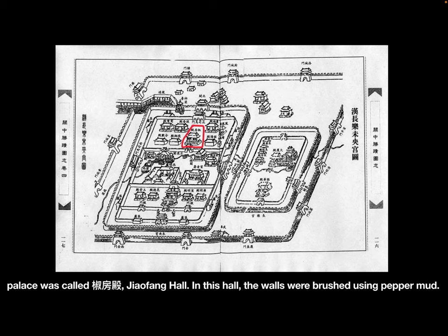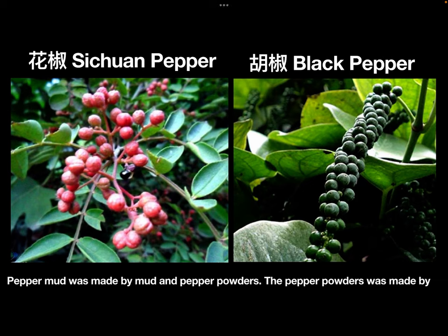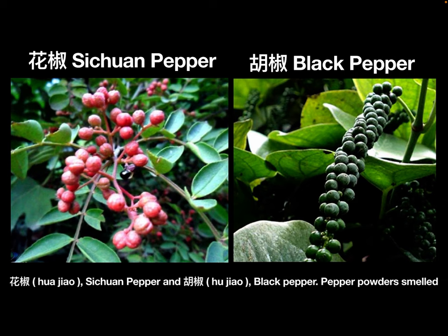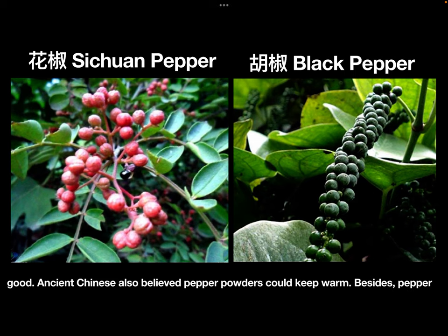In this hall, the walls were brushed using paper mud. Paper mud was made from mud and paper powders. The paper powders were made from huajiao (Sichuan pepper) and hujiao (black pepper), so the paper powders smelled good.